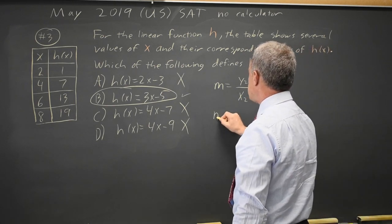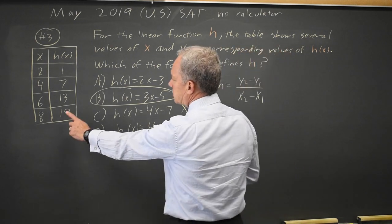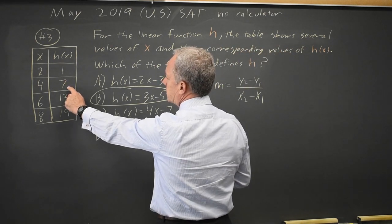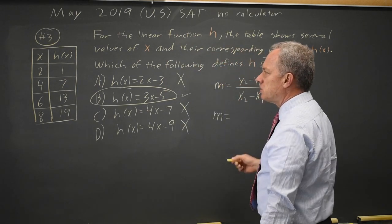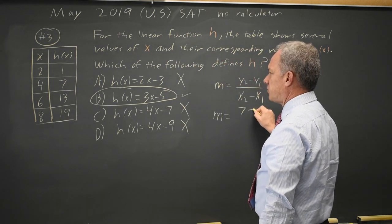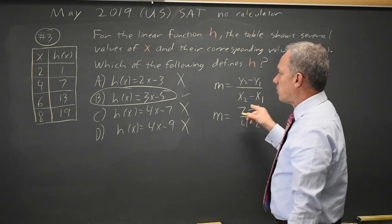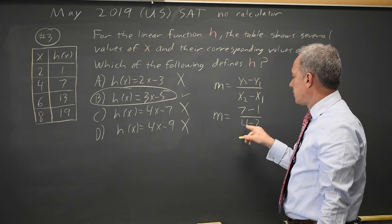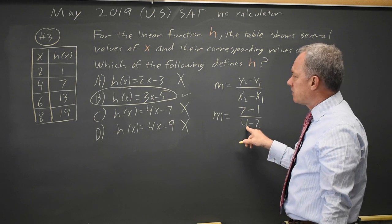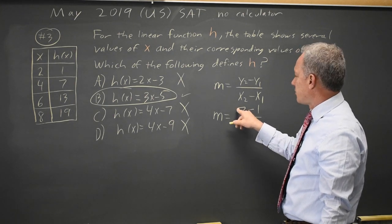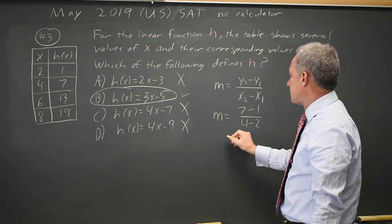In this case, our slope M is, let's take the slope from x equals 4 to x equals 2. So h of 4 is 7, h of 2 is 1 over 4 minus 2. Notice my y's are on the numerator, x's are on the denominator, and I have the same order. The point 4, 7 is first, the point 2, 1 is second.